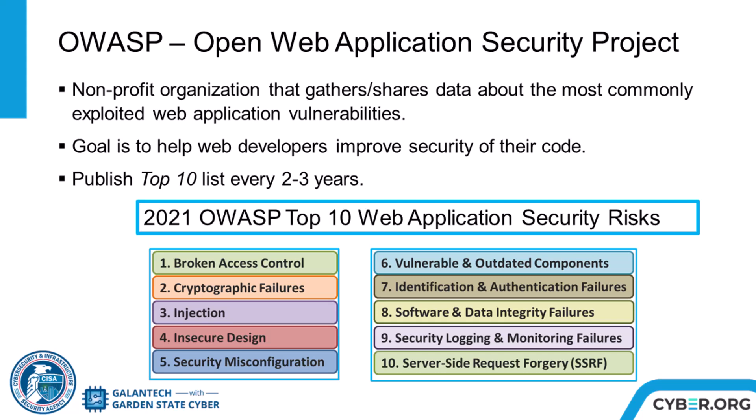This list ranks these risks based on the severity of the vulnerabilities, how often the security issues are seen, and the degree of their possible impact. The detailed information available on the OWASP site includes guidance on writing code to avoid or fix these vulnerabilities. The current list, with the most severe first, includes broken access control,